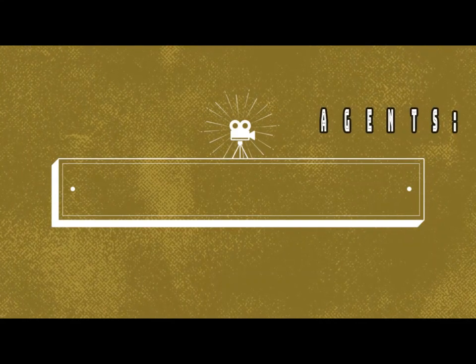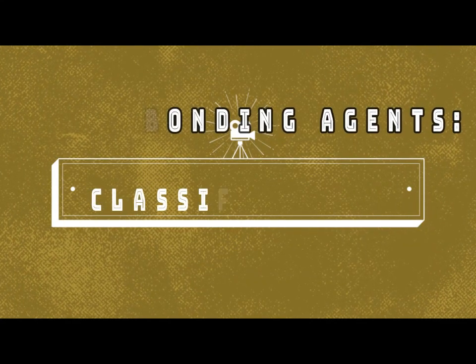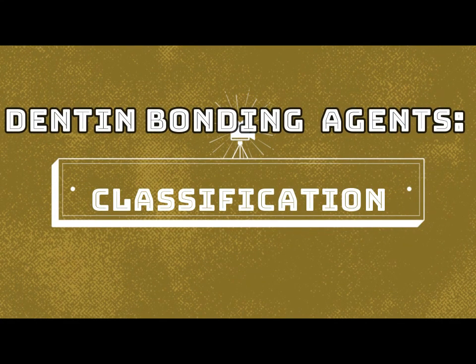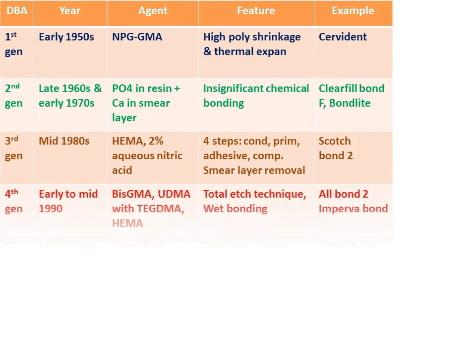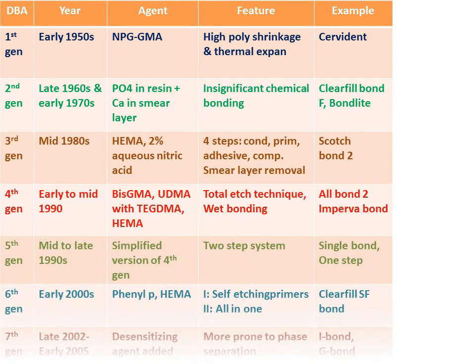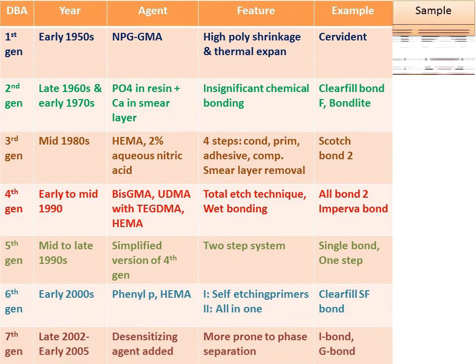Dental bonding agents and their classification. In this presentation we shall start from where we left in the previous presentation and cover the classification of dental bonding agents and the various generations. This chart is a brief overview of the first to seventh generations of dental bonding agents, their primary features and examples. We shall have a look at each one of these in detail now.